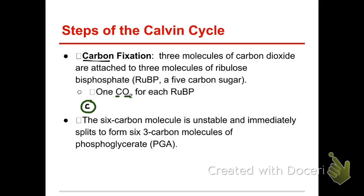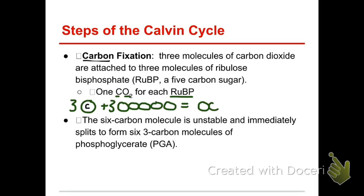The first step that happens is that we take three molecules of carbon dioxide, and we're going to add it to this molecule called RuBP — ribulose bisphosphate. It's a five-carbon sugar that is already present in the stroma of the chloroplast, just floating around, waiting to be used. So if I add a five-carbon molecule to a one-carbon molecule, and we'll have three of these, what do we get? A six-carbon molecule.